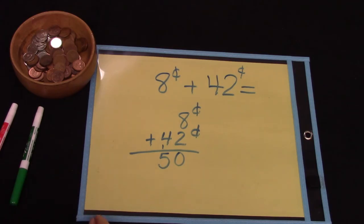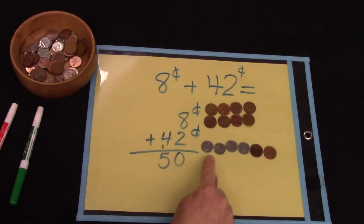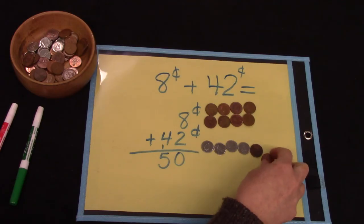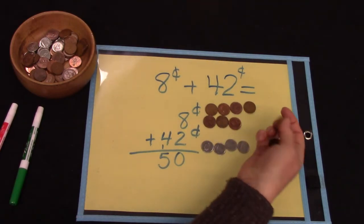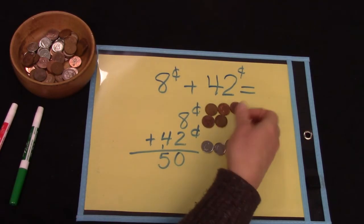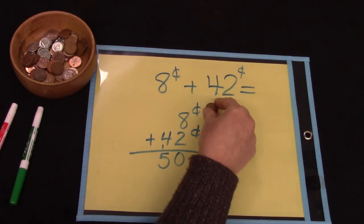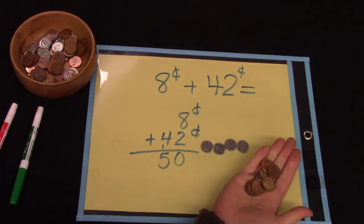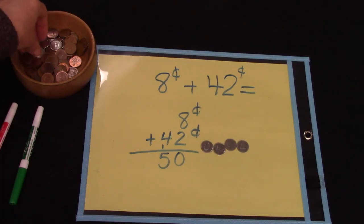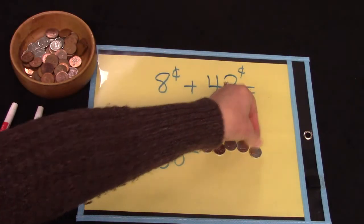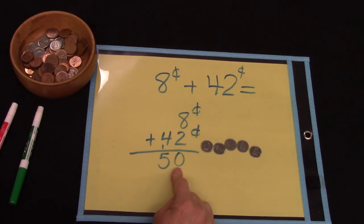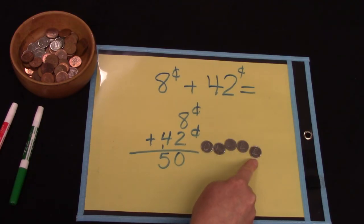Well let's try this. Here we have 8 cents and then 42 cents: 10, 20, 30, 40, 41, 42. We can add our pennies together: 1, 2, 3, 4, 5, 6, 7, 8, 9, and 10. We can trade these 10 pennies for 1 dime and that gives us 50 cents. Well really we had 50 cents before: 10, 20, 30, 40, 50.